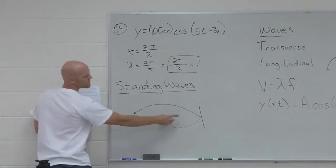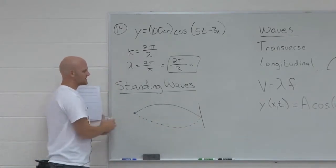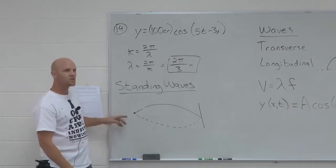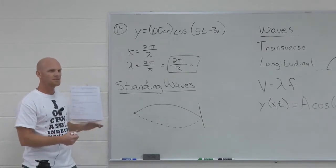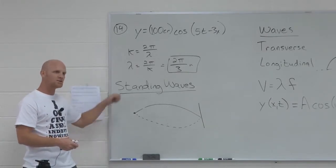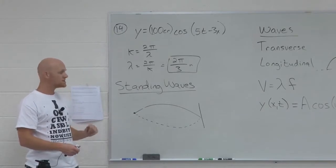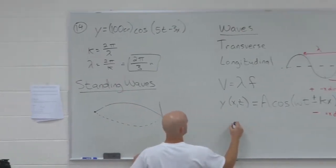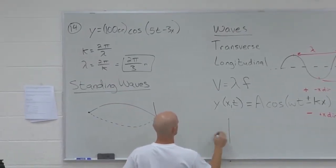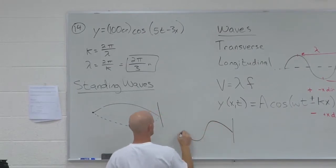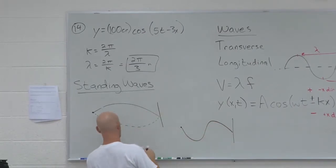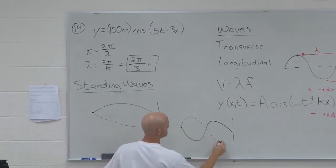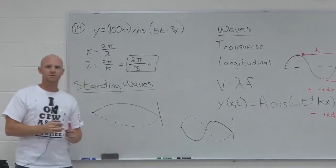Same thing here — both the wall and this end where I'm wiggling it, those would be called nodes. If you're oscillating at just the right frequency, you can create these. The next one you might create would be this one with the corresponding anti-wave from the reflection.